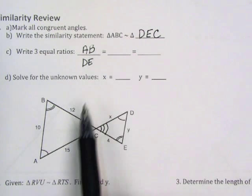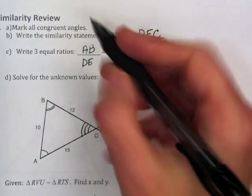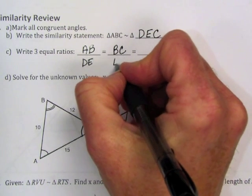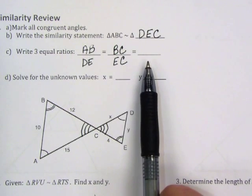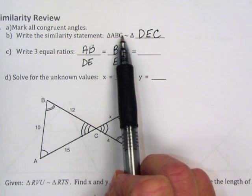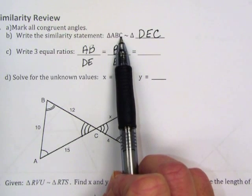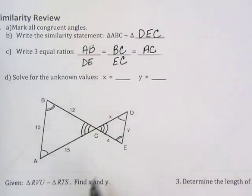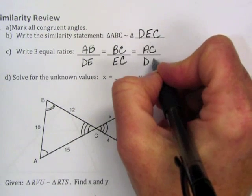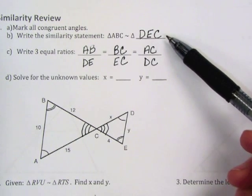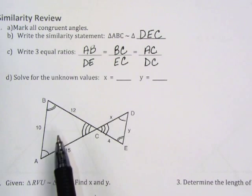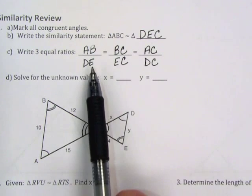Then we're going to look at the next two letters in the similarity statement, letter B and C, and that relates to side BC in the triangle. Side BC corresponds to side EC in the other triangle. Our third pair of corresponding sides, or our third ratio, comes from side AC, the first and third letter in the statement, and side AC is going to correspond to side DC. If we have our similarity statement correct and we have written our ratios correctly, the rest of the problem becomes an algebra problem.